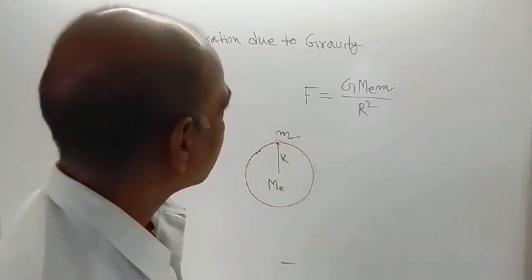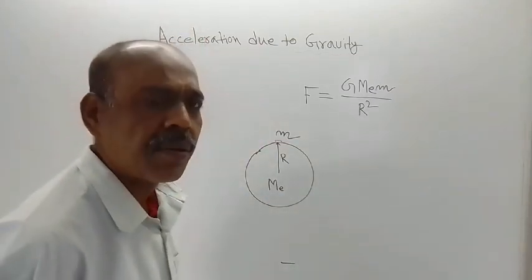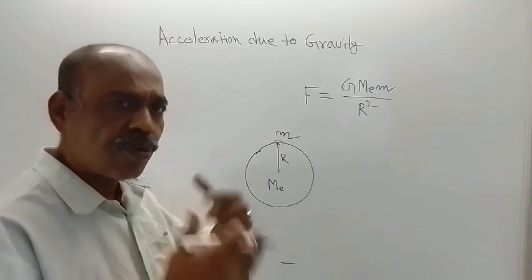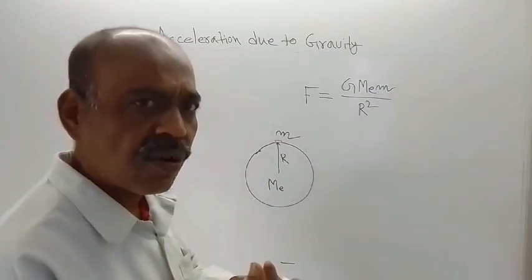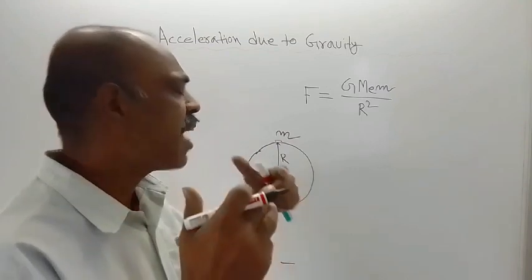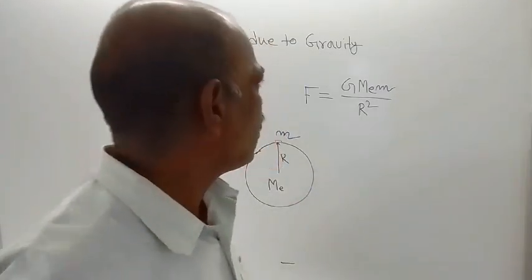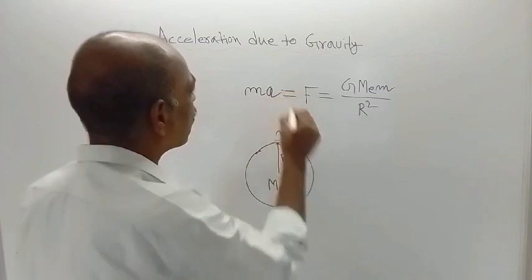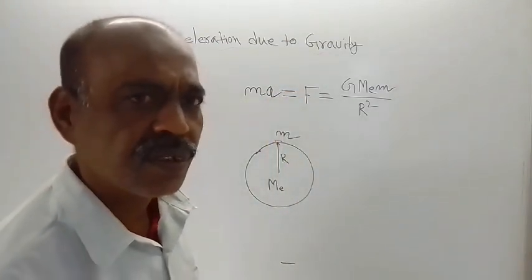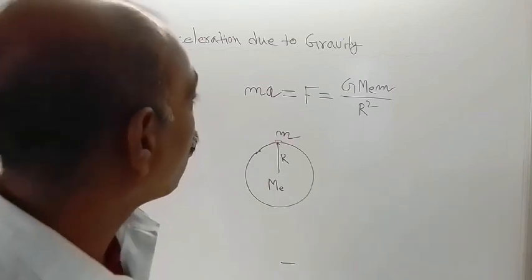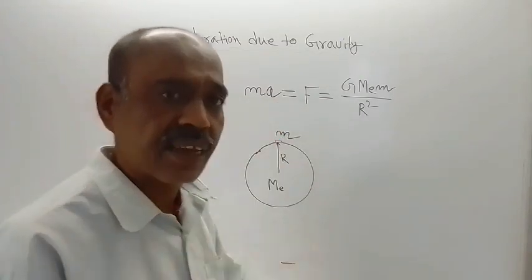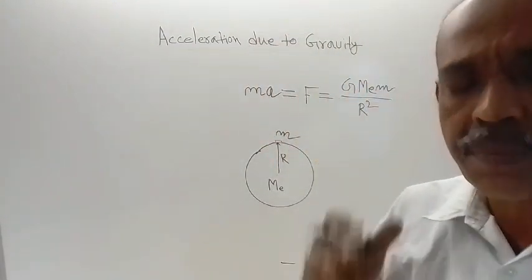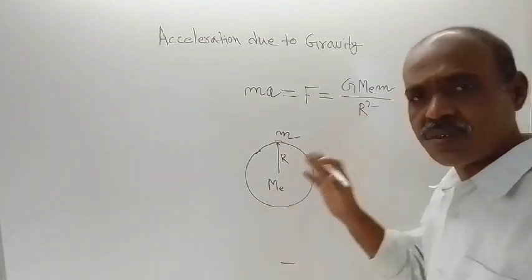This is the force of attraction. We know that since there is a force of attraction, there will be an acceleration of the small object. If that acceleration is denoted by small a, then we can write F = m·a, where a is the acceleration of the object. This comes from Newton's second law of motion: force equals mass into acceleration, when mass remains constant.